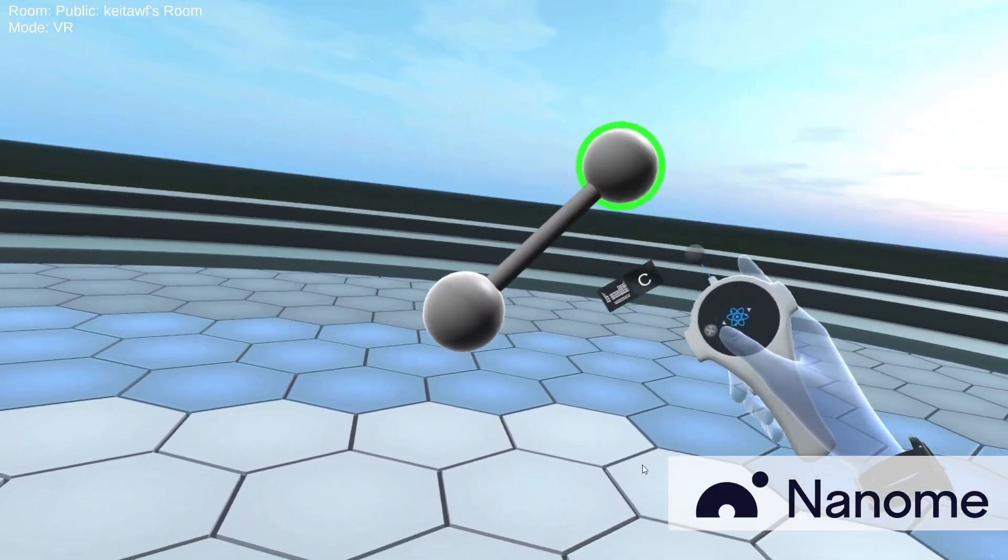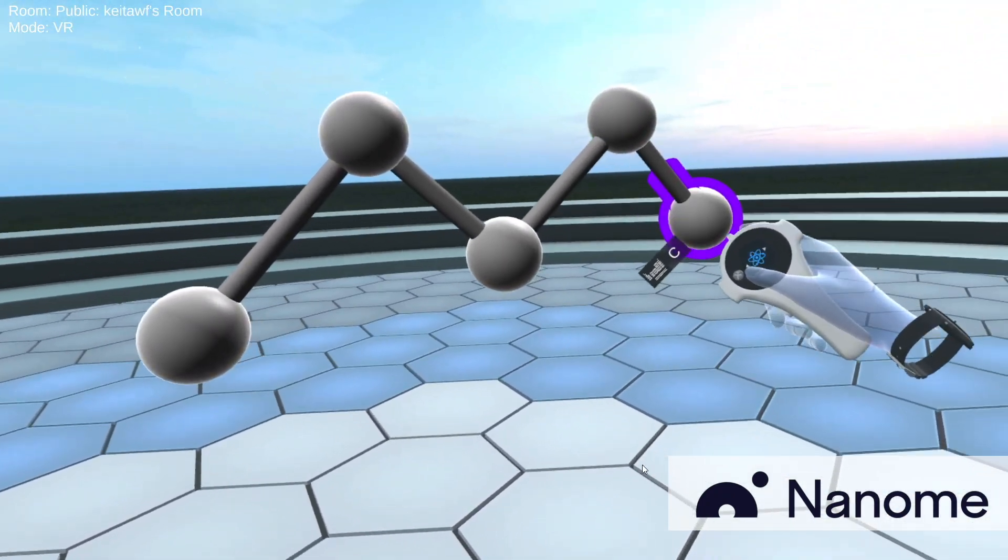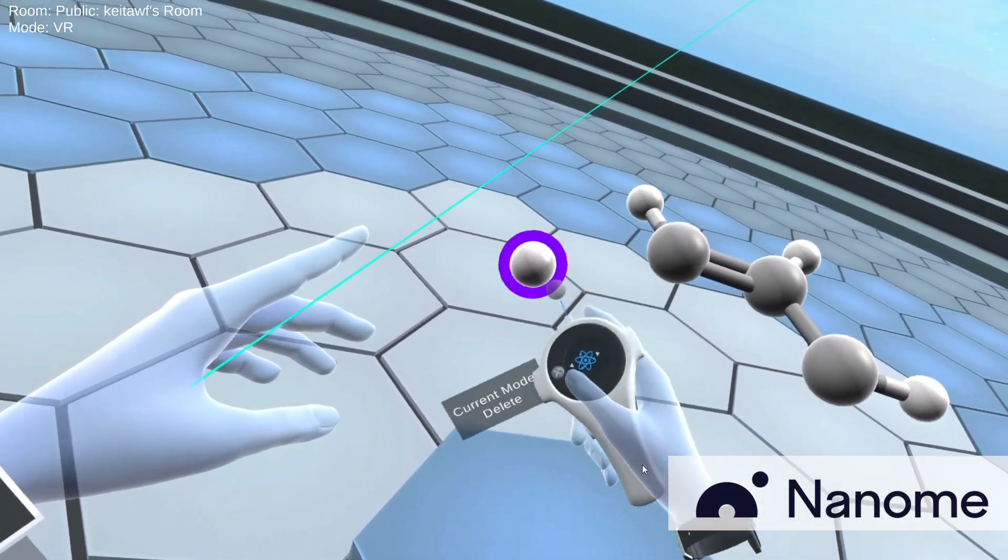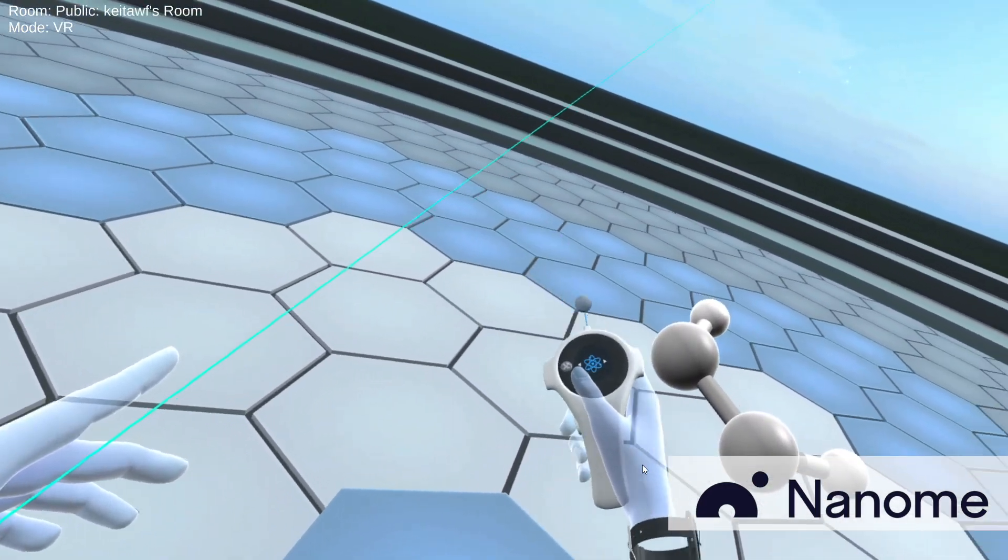And once we import benzene, we can delete all the different atoms around the benzene in delete mode, and then we can essentially start off with one atom.